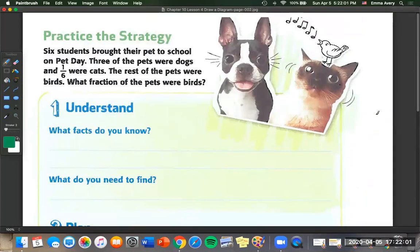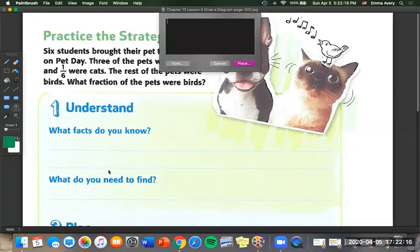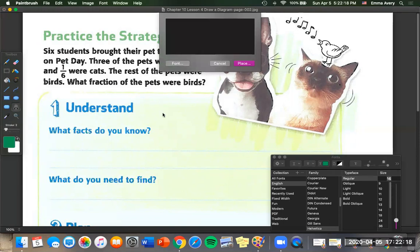On to the next page. Six students brought their pets to school on pet day. Three of the pets were dogs and one sixth were cats. The rest of the pets were birds. What fraction of the pets were birds? So what facts do we know? Well, we know that three pets were dogs and one were cats.